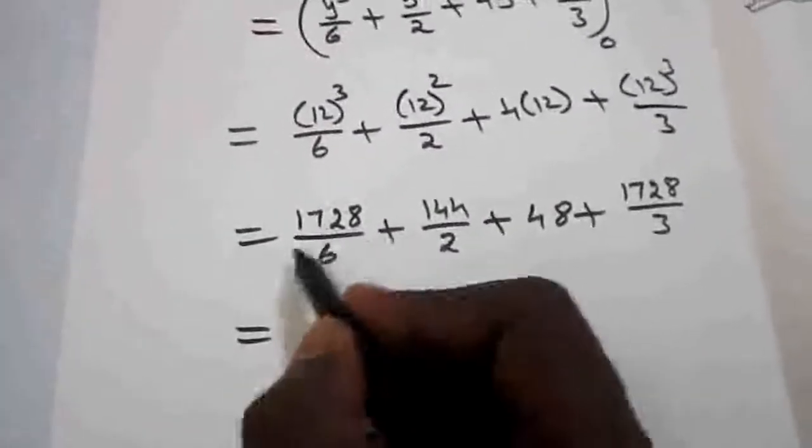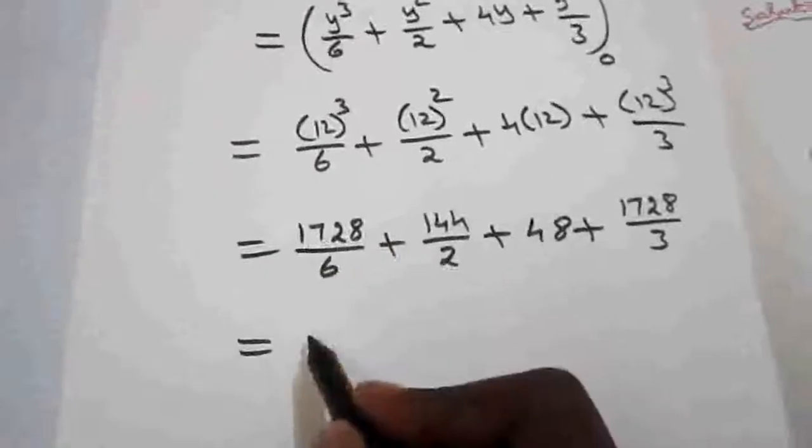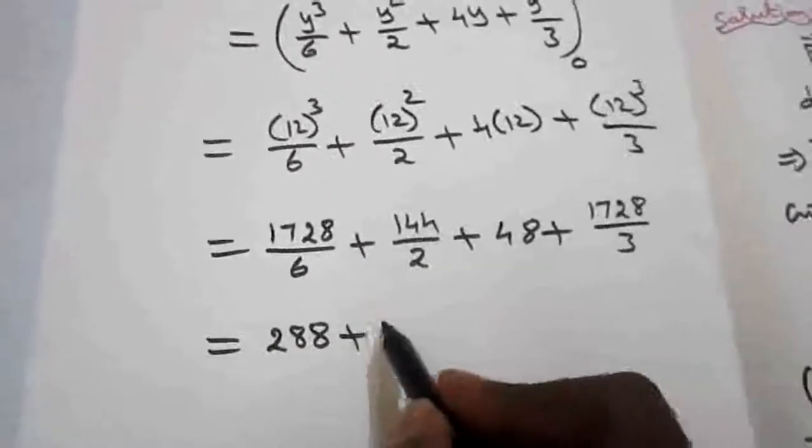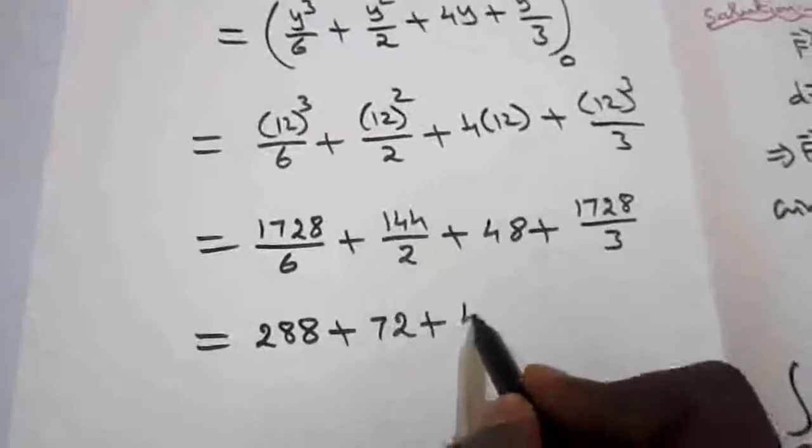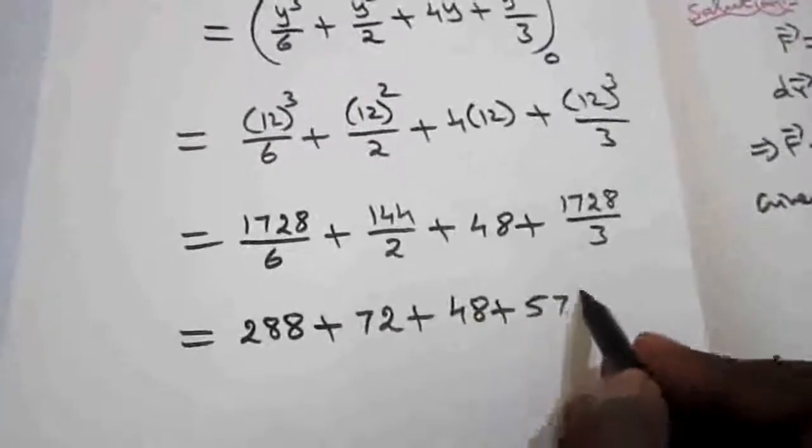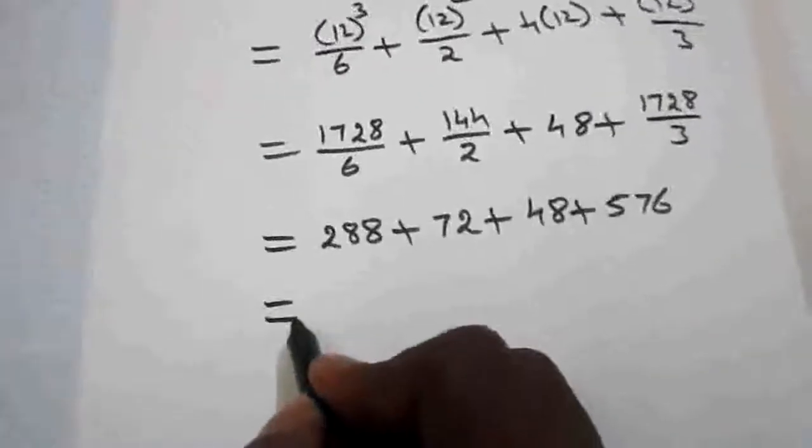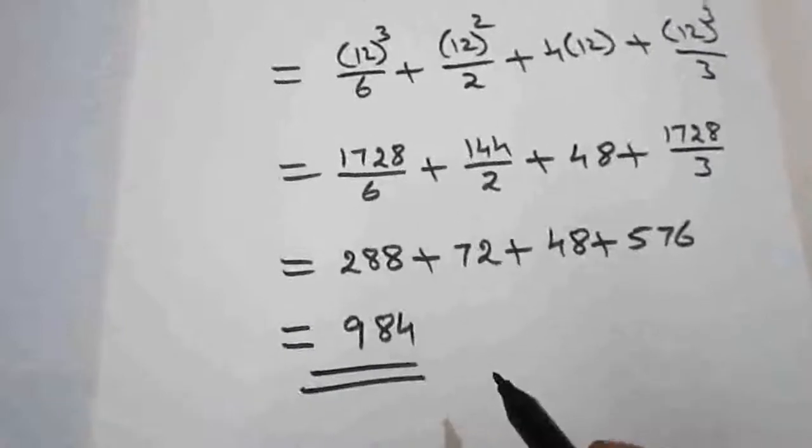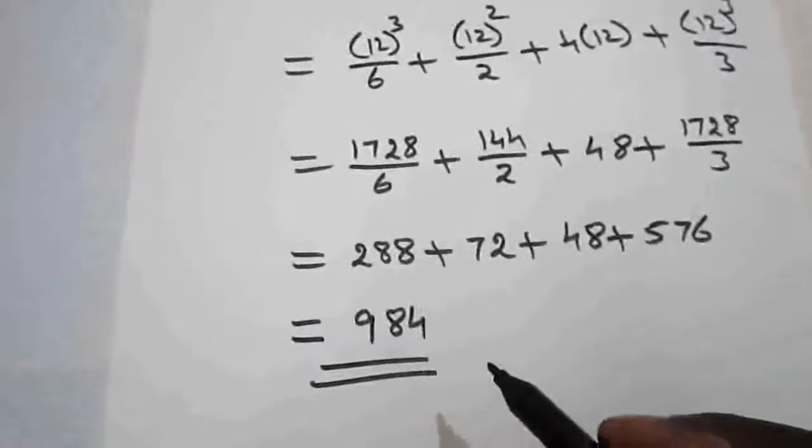So now see if you cancel it. If you cancel this with 6, you will be getting 288. Cancel this: 72. This is 48. Cancel by 3, you will get 576. Add all the values. You will be getting 984, which is the answer of the integral value of the given problem.